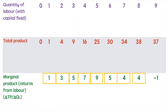The ninth worker actually reduces overall production. To understand why, we have to recall our pizza shop example. After hiring so many employees, eventually the workspace is crowded and inefficiencies arise — potentially workers get in each other's way.